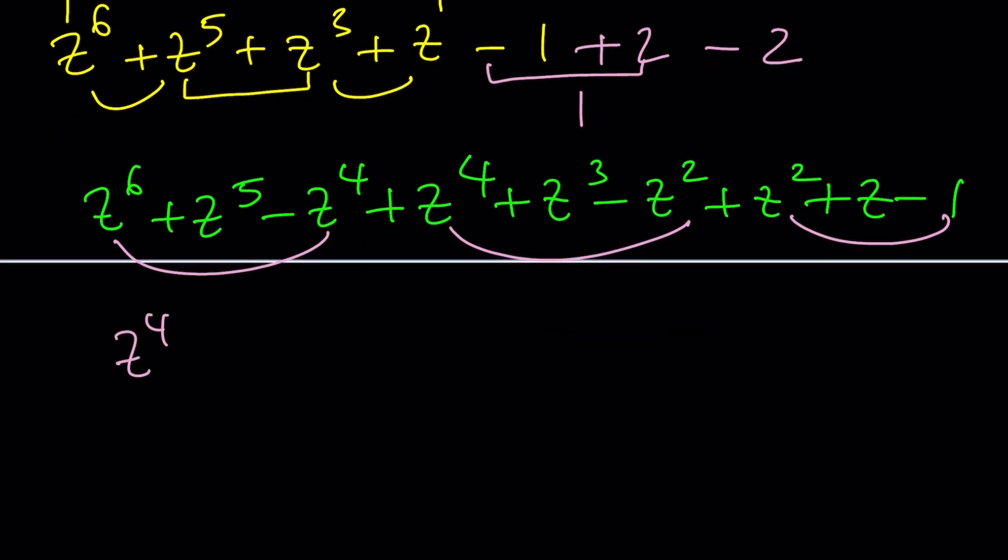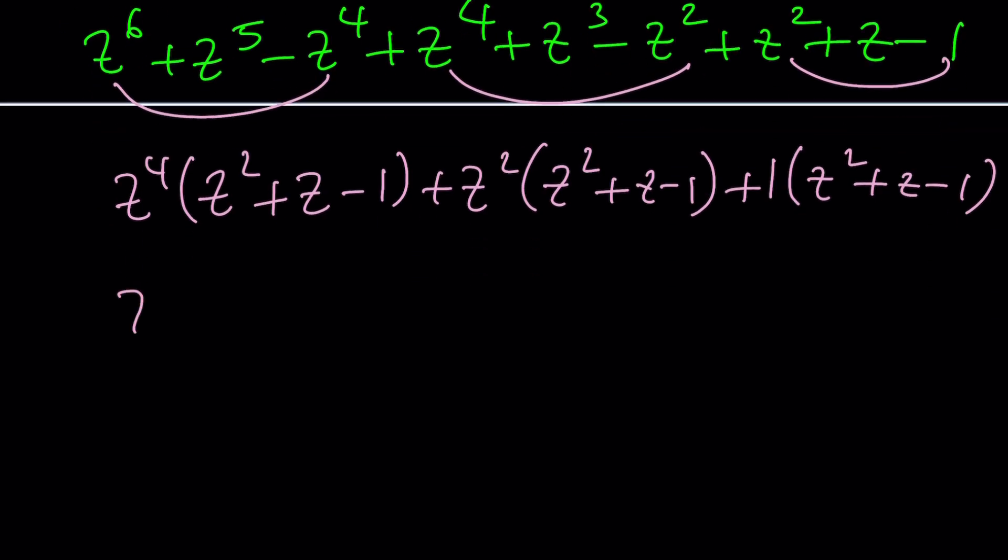So, now, for my first group, z to the fourth is a common factor. z squared plus z minus one. And then, z squared is a common factor. z squared plus z minus one. For the last pieces, one is a common factor. You see how everything falls apart. Beautiful. z squared plus z minus one is a common factor. And then, the other common factor is going to be z to the fourth plus z squared plus one equals zero. And guess what? The second factor is factorable. A factor that's factorable is an awesome factor.